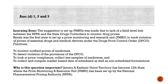PMRUs have already been set up by NPPA in 11 states, including Kerala, Odisha, Gujarat, Rajasthan, Punjab, Haryana, Nagaland, Tripura, UP, Andhra Pradesh, and Mizoram. Recently, the 12th one was constituted in the Union Territory of Jammu and Kashmir.